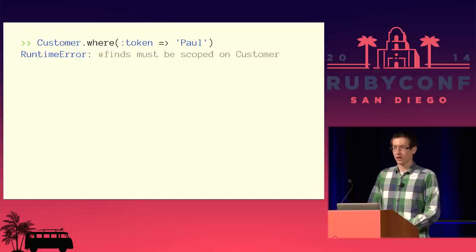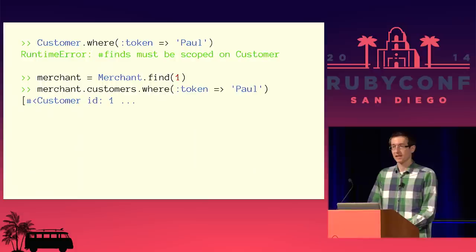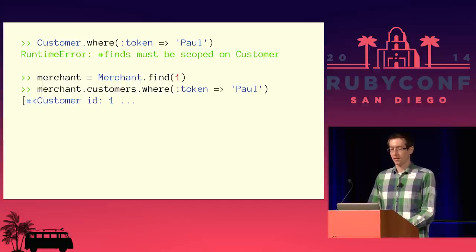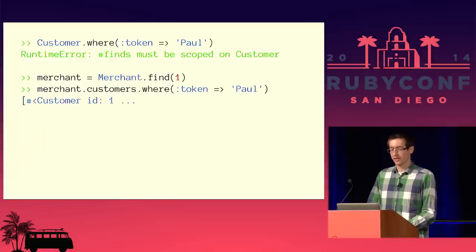At Braintree, we added something we call the scoped find hook. We don't let you look up objects unscoped. If you tried to look up a customer directly, it would blow up and say 'finds must be scoped.' To actually look up a customer, you'd have to look up the merchant first and then chain it. This is a hack we added to our codebase that works across almost all of our associations and basically prevents you from doing the wrong thing accidentally. We have tests for these code paths, but if there's a code path that wasn't properly tested or had an edge case without a test, at least this code would blow up in production — you'd get a runtime error preventing the action from returning data.